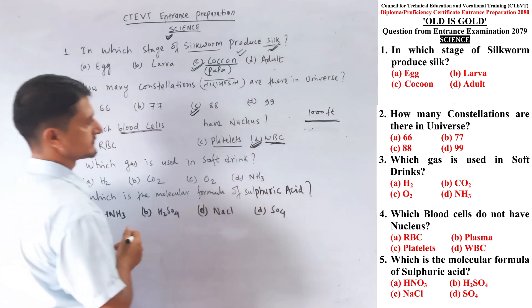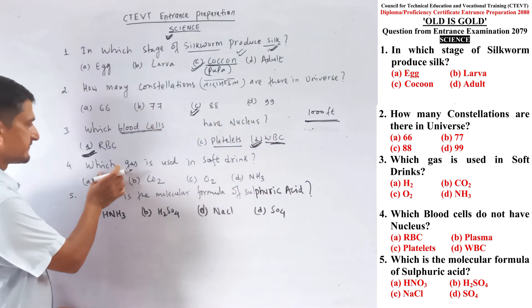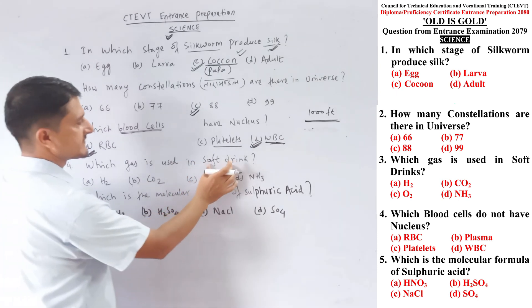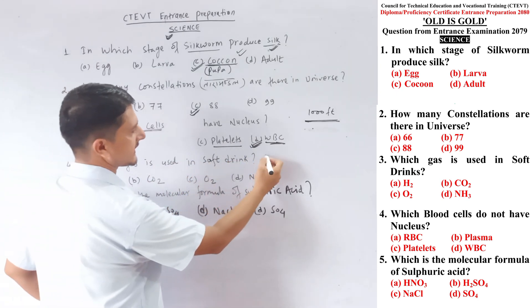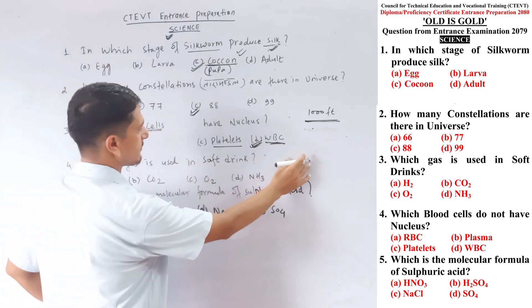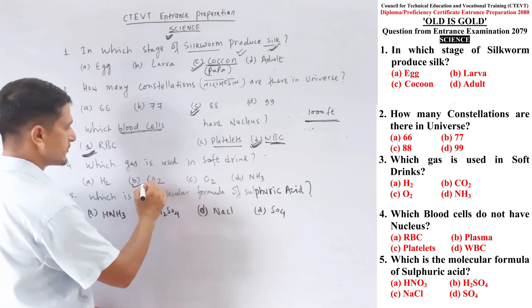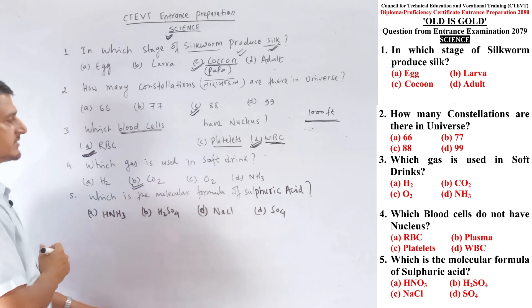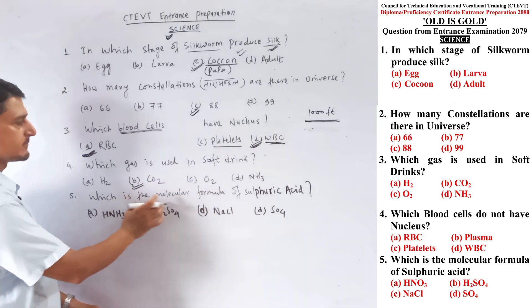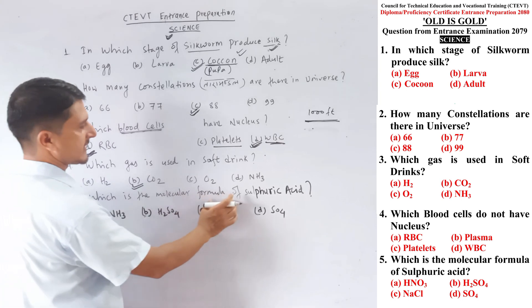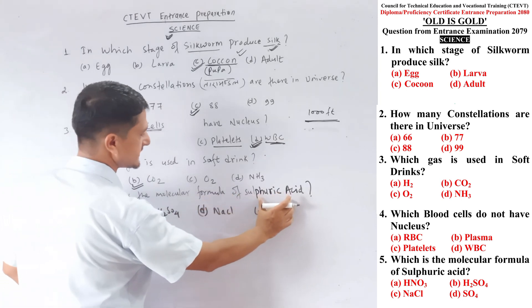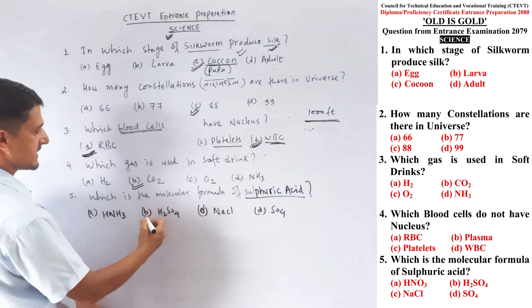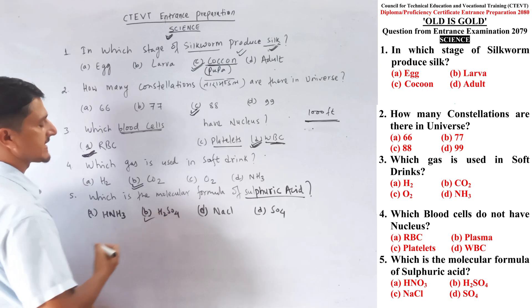Question number four: which gas is used in soft drinks? Soft drinks like Coca-Cola and soda water use CO2 (carbon dioxide) gas. Question number five: what is the molecular formula of sulfuric acid? The molecular formula of sulfuric acid is H2SO4.